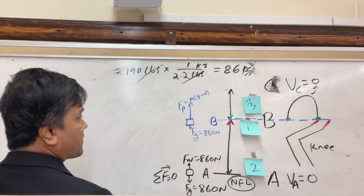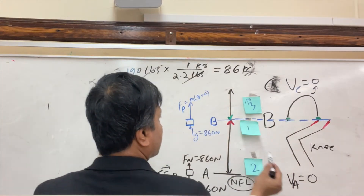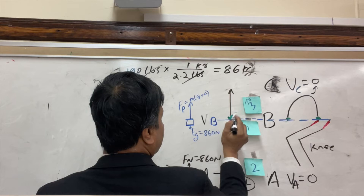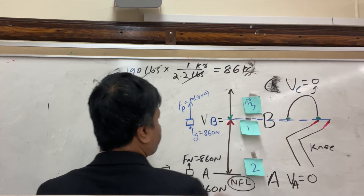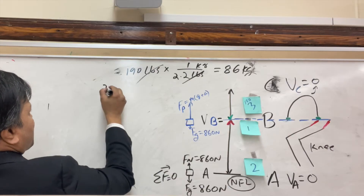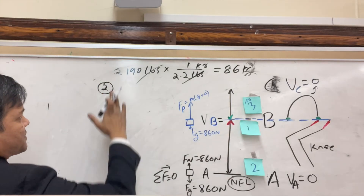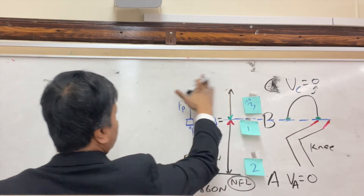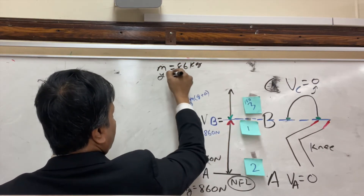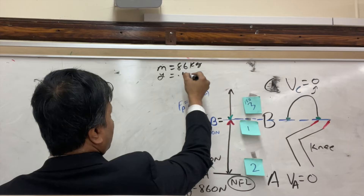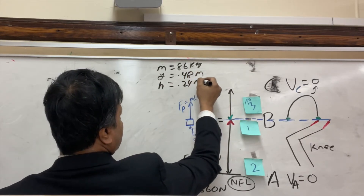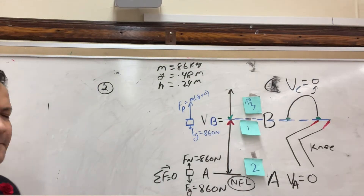We've found velocities at A and C. Now we need to find velocity at B. For problem number two, we know: mass = 86 kg, squat distance y = 0.48 meters, jumping height H = 0.24 meters.